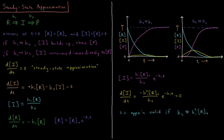In this case, the change in concentration of the intermediate with respect to time equals its production rate in reaction one, which is K1 times the concentration of R, minus its consumption in reaction two, which is K2 times the concentration of I. According to the steady state approximation, that equals zero. So we can solve for I: the concentration of the intermediate equals K1 times the concentration of the reactant divided by K2.